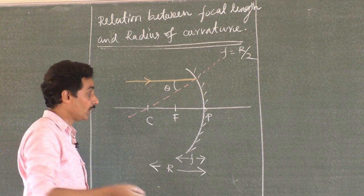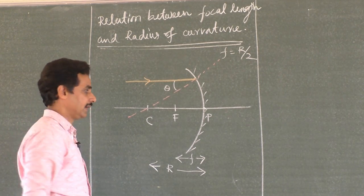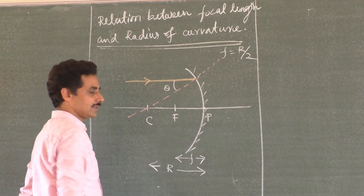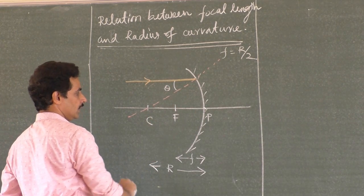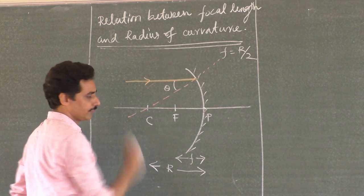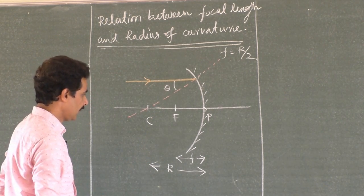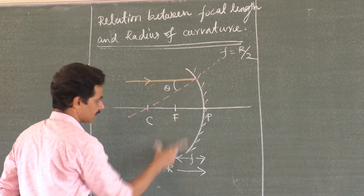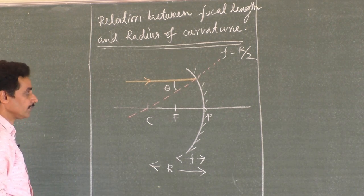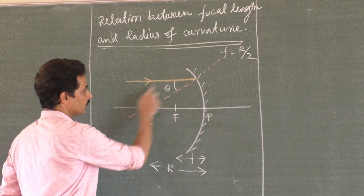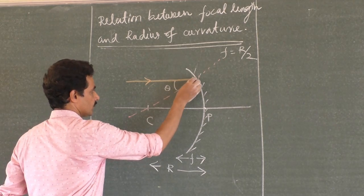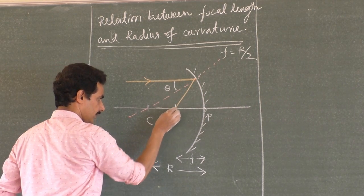Keep drawing this diagram as I draw it — let your fingers know what is happening and let it be recorded in the brain. Take a concave mirror, mark the principal axis, the pole as the geometric center, the center of curvature, and the focus where parallel rays meet. Mark the focal length and radius of curvature.